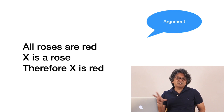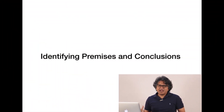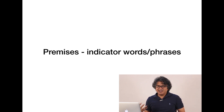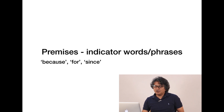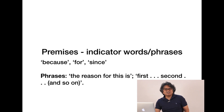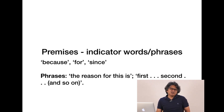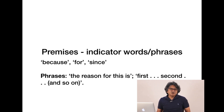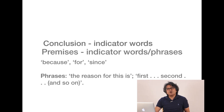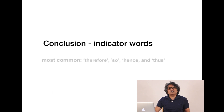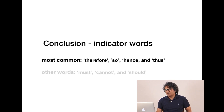There are indicative words for premises as well as conclusions. For premises, the indicator words or phrases are: 'because,' 'for,' 'since,' and phrases like 'the reason for this is,' 'first,' 'second,' 'firstly,' 'secondly,' 'in addition,' and so on. This is actually common-sensical — when you are trying to make a claim and take the help of evidence to support it, those are the kinds of words you use. Similarly, for conclusions you would use words like 'therefore,' 'thus,' 'hence,' and so on.